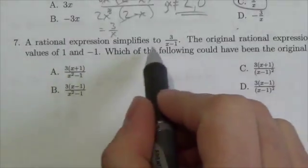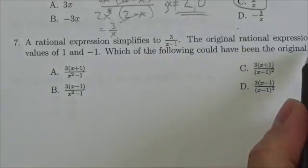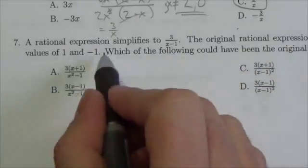Now the question here says, a rational expression simplifies to 3 over x minus 1. The original rational expression has non-permissible values of 1 and negative 1.